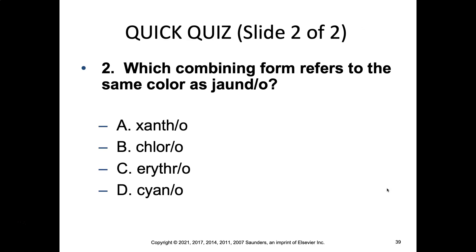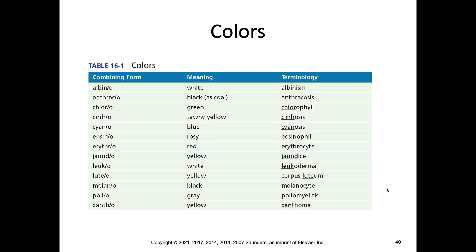Which combining form refers to the same color as John Doe? It's not cyano, and it's not erythro either — I'll leave it to you to figure the rest out. Looking at colors: there are three combining forms for yellow, one for tawny yellow, two for black, and two for white. They're used in different ways, so be aware of that.